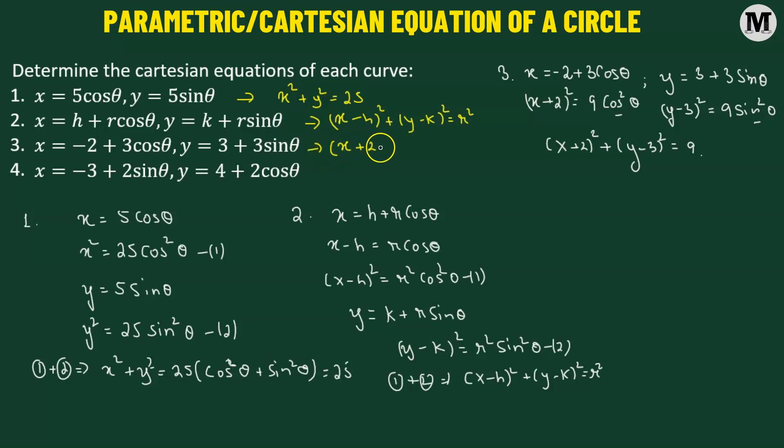So the Cartesian equation for problem 3 is x plus 2 whole squared plus y minus 3 whole squared equals 9.